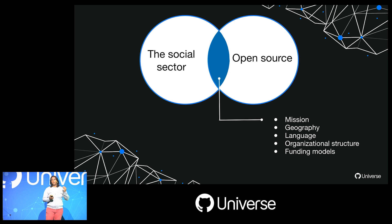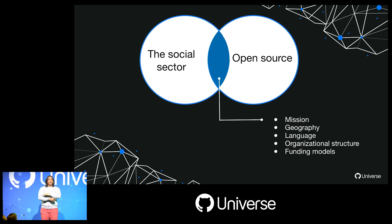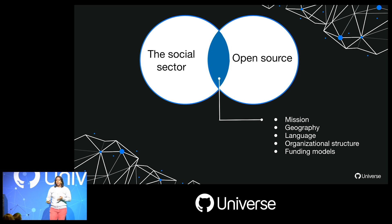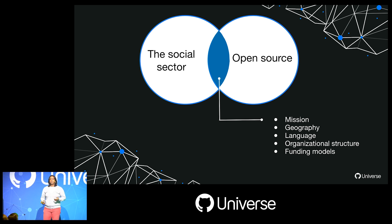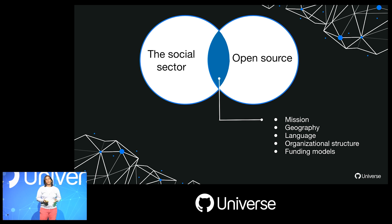There are many ways to look at this interaction. We could look at the mission or vision, the thematic mandate of the organization, or the geography — where is the organization based? Do they have a headquarters in one country, work abroad in others, have federated organizations, or are they concentrated on one local area? There's also language: the majority of the open source ecosystem is hosted in English. What happens if we're working in Francophone West Africa, or in Spanish or Portuguese-speaking Latin America? We could also look at organizational structure.